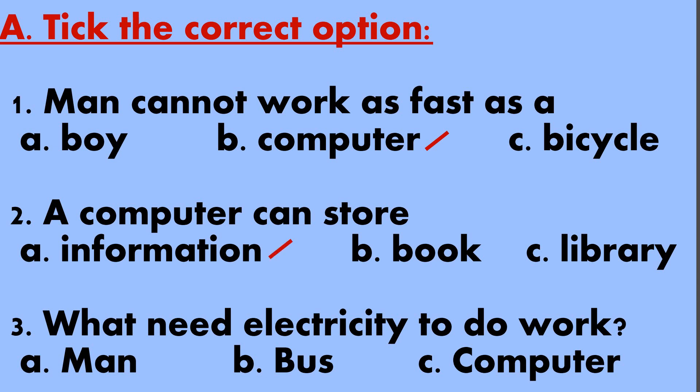Third question is What needs electricity to do work? Option a man. Option b bus. Option c computer. And the right option is Option c computer.